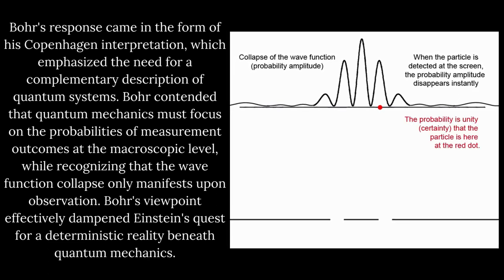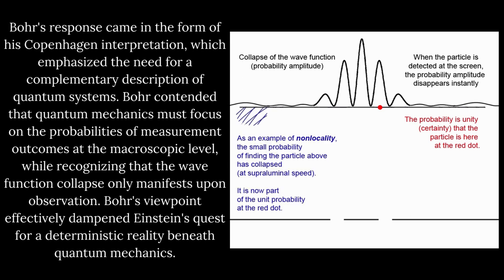Bohr contended that quantum mechanics must focus on the probabilities of measurement outcomes at the macroscopic level, while recognizing that the wave function collapse only manifests upon observation. Bohr's viewpoint effectively dampened Einstein's quest for a deterministic reality beneath quantum mechanics.